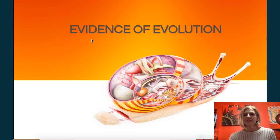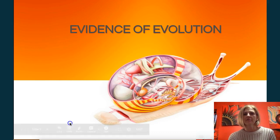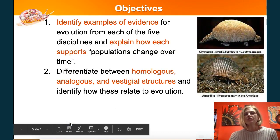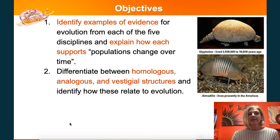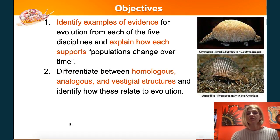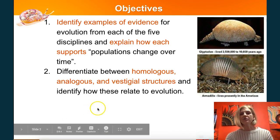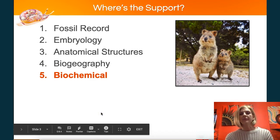Hi, welcome back AP Biology students. Today I wanted to talk to you about some of the evidence we have for evolution. You should be able to identify examples from five separate disciplines and explain how those examples are evidence for evolution. We're also going to talk about some key terms like homologous and analogous structures, and you should be able to define those as well.